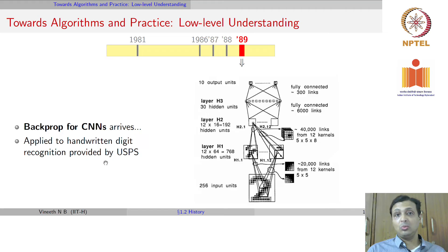In 1989 was the first version of backpropagation for convolutional neural networks. It's not necessarily low level visual understanding, but it happened in the 80s. It was applied to handwritten digit recognition, as we will talk about very soon.